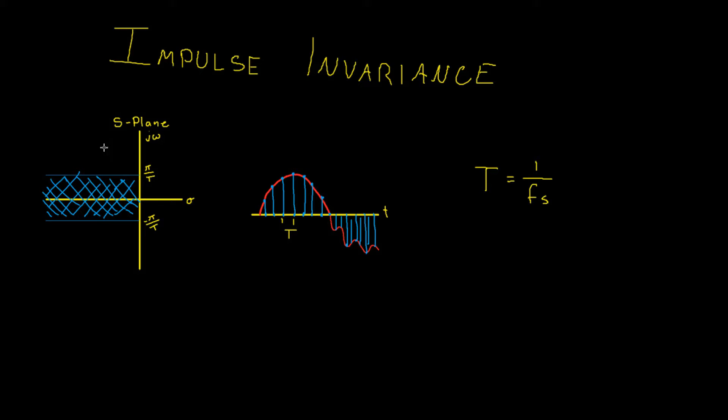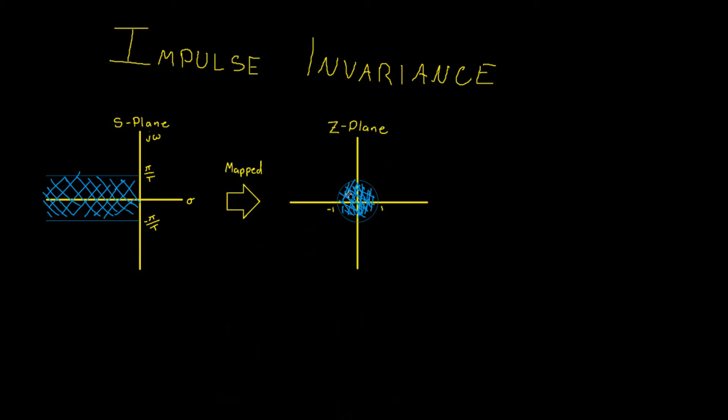So you might be wondering, how are we mapping this s-plane and what are we mapping it to? Well, we are mapping it to the z-plane. Why are we mapping the left half plane of the s-plane? I haven't alluded to this yet, however I am hoping that if you are taking a signal processing course or a control system course that you should have come across this in the past.